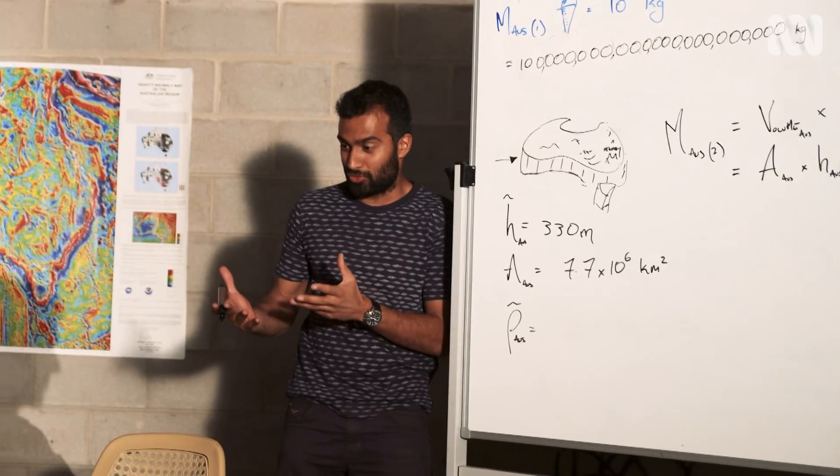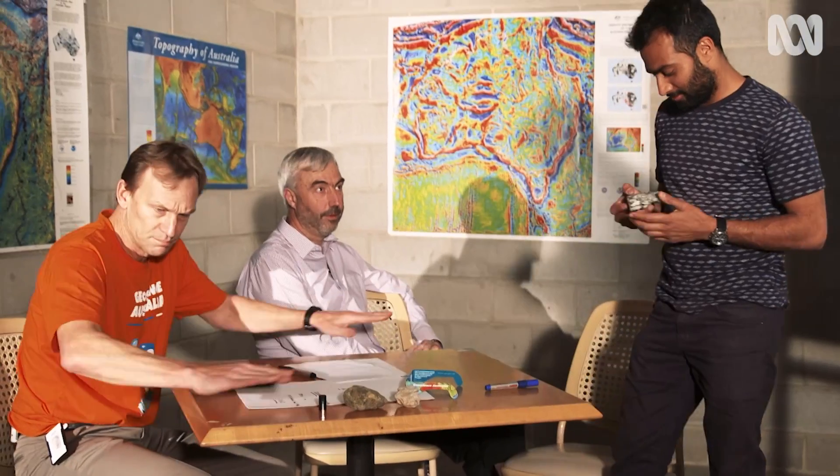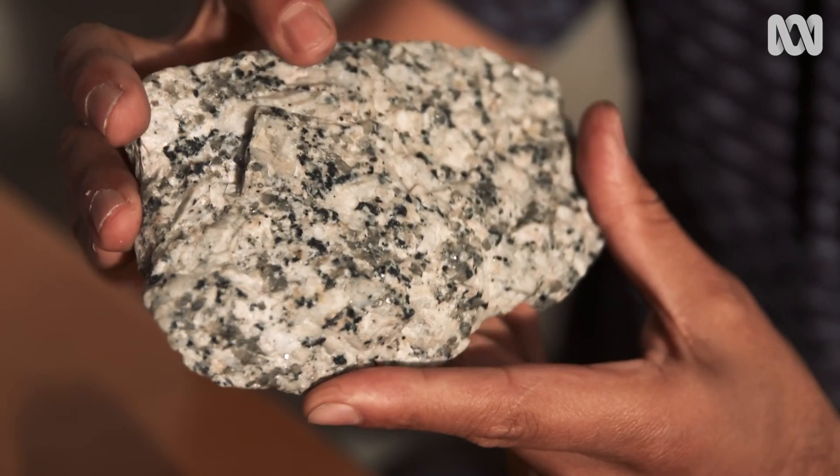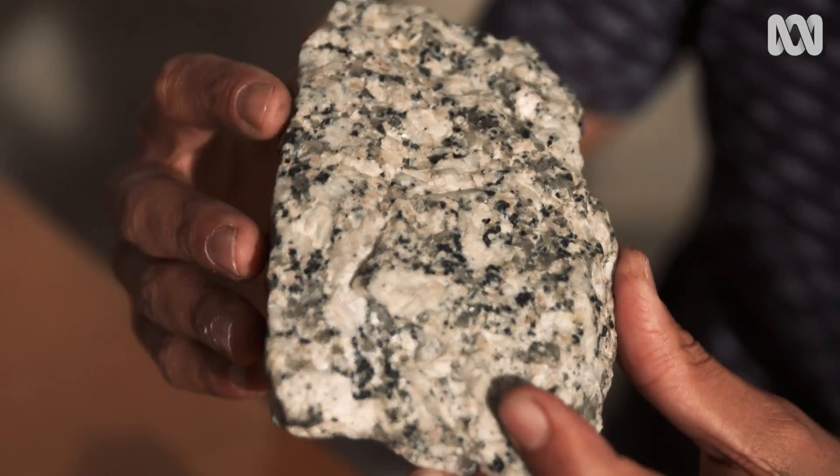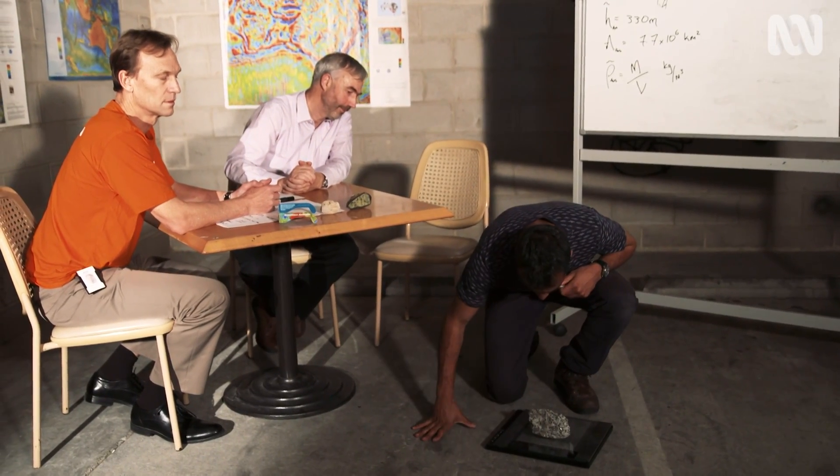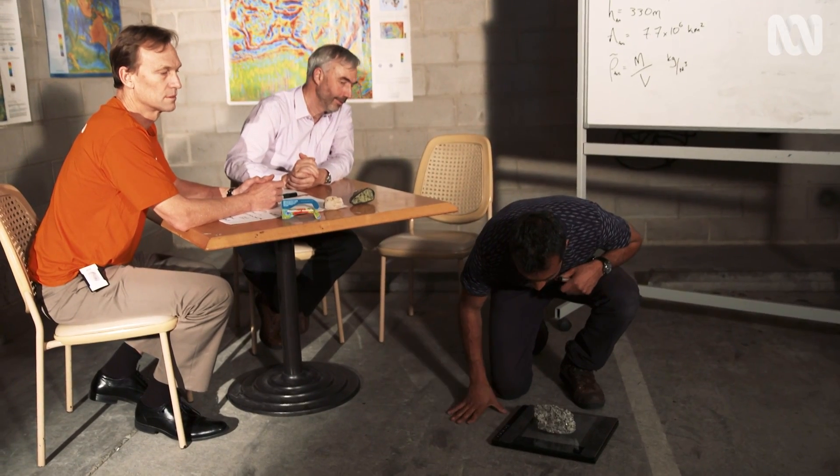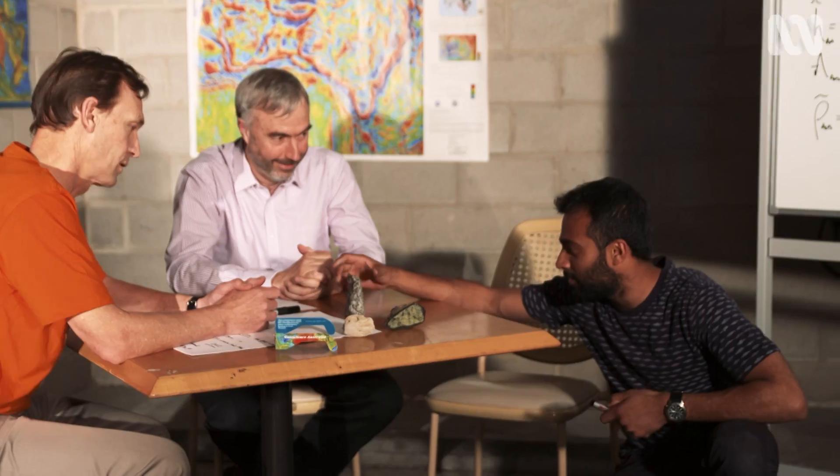And Richard, you've brought along an average rock of Australia. Yeah, here's a granite. It's like your granite bench tops. This is the bedrock of Australia. Yeah, fundamentally. It's about 320 grams.